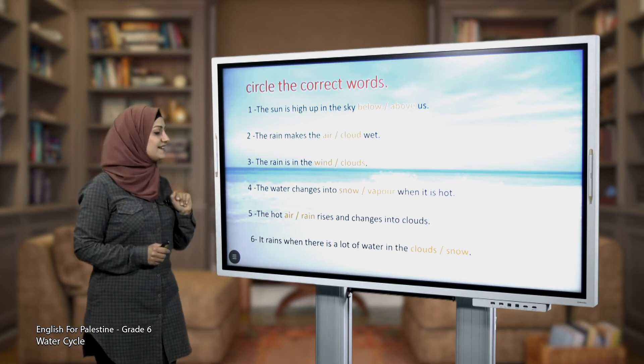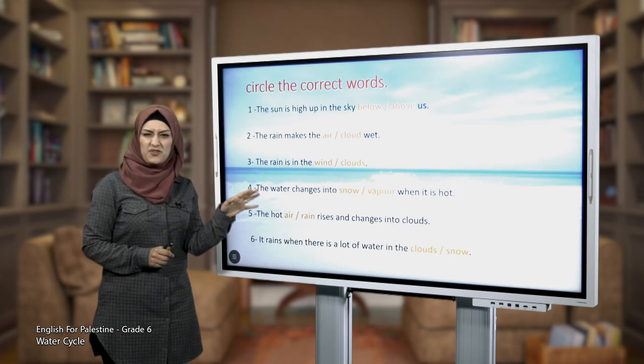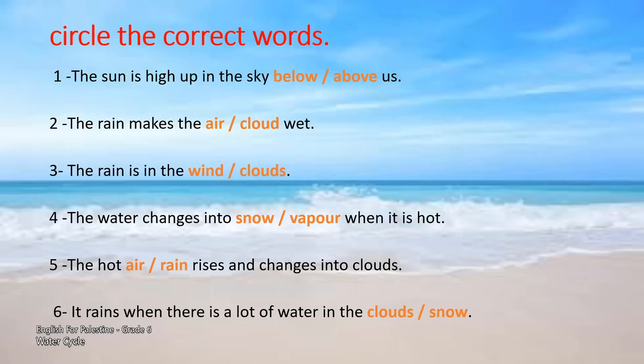Three: the rain is in the wind or in the clouds? Yes, the rain is in the clouds, not in the wind. Very good! Four: the water changes into snow or vapor when it is hot? It changes into vapor. Five: the hot air or rain — have you ever seen hot rain? — rises and changes into clouds. The hot air. Very good!